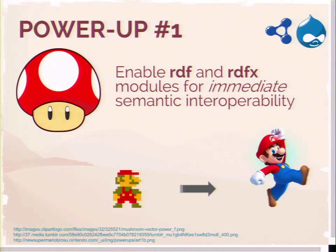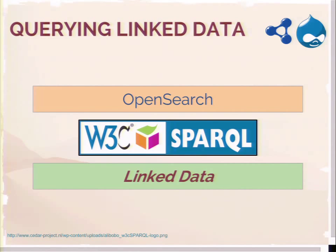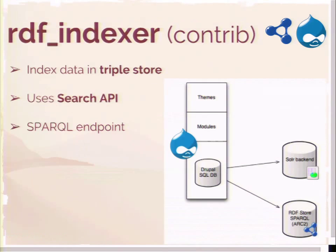To power up your sites, the first thing you want to do is enable RDF and RDFX. You don't have to do anything with those things - just enable them to gain immediate semantic interoperability on your site. The next power-up is about making this data queryable. In that stack of technology we showed earlier, what's sitting between OpenSearch and linked data is this SPARQL language that lets OpenSearch figure out how to talk to linked data. I want to bring Stefan back up to talk about his next module.